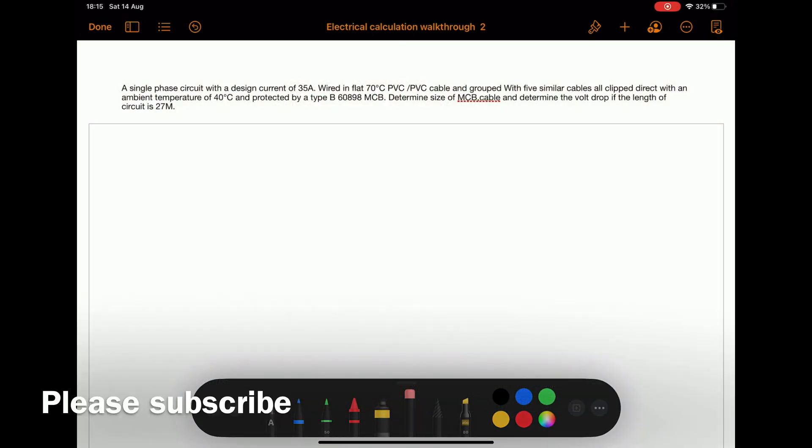The question is a single phase circuit with a design current of 35 amps, wired in flat 70 degree PVC-PVC cable and grouped with five similar cables, all clipped direct with an ambient temperature of 40 degrees C and protected by a type B 60898 MCB. We need to determine the size of the MCB, the size of the cable, and determine the volt drop if the length of the circuit is 27 meters.